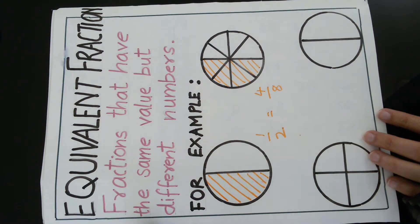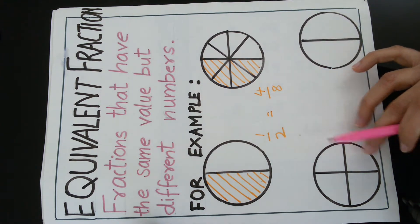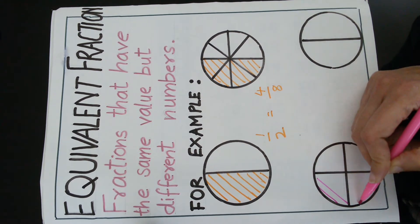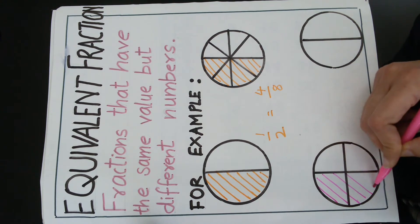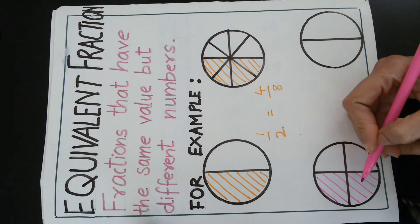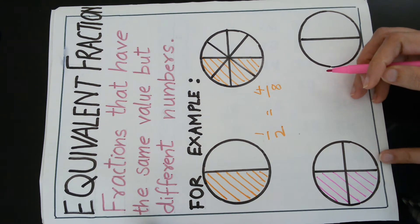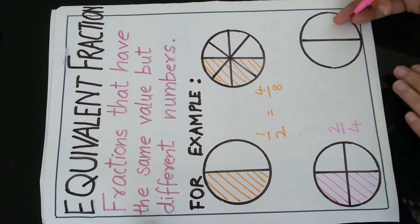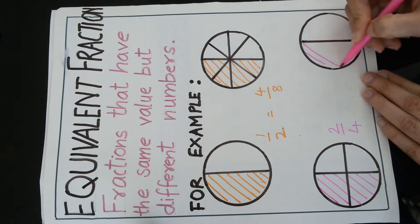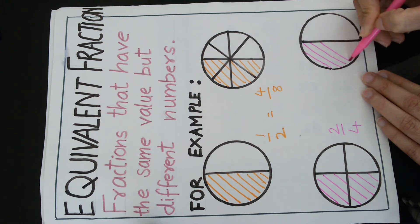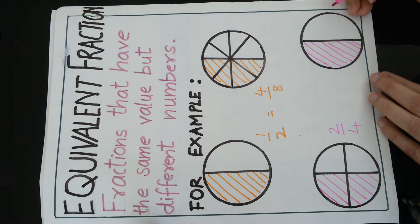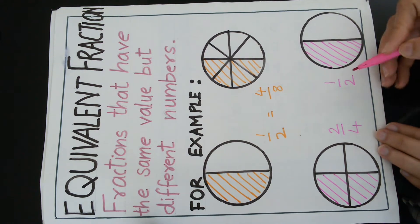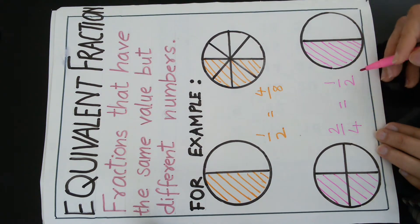Let's see the next example. Here this circle has a total of 4 parts. If I shade half of the circle, that means I have shaded 2 parts out of the 4 parts. I will write it in the form of fraction as 2 upon 4. Again, if I shade half of the circle, I write this as 1 upon 2. So 2 upon 4 is equal to 1 upon 2. These are equivalent fractions.